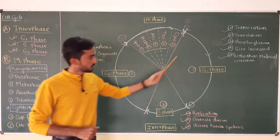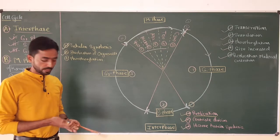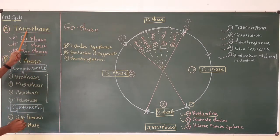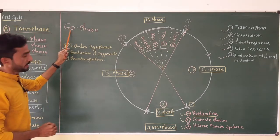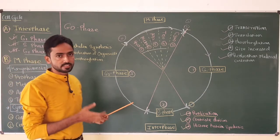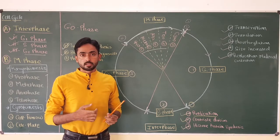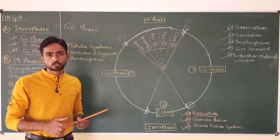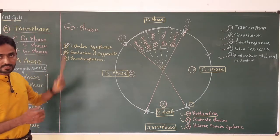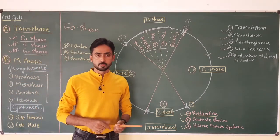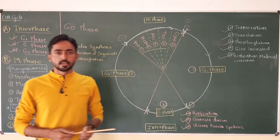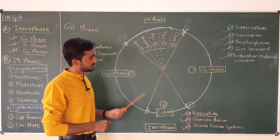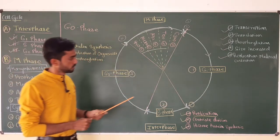In this video, I am going to focus on another phase which comes under the interphase: the G0 phase. Interphase mainly has three phases — G1, S, and G2 — but sometimes a cell may enter into G0 phase. G0 is the stage in which the cell remains metabolically active, but it does not show G1, S, or G2 activities. That means the reproduction or growth of the cell gets halted; the cell remains alive but does not show growth or reproduction. The right position of G0 is within the G1 phase.